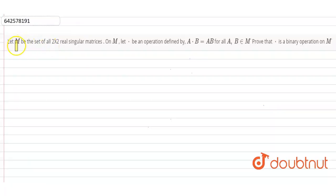So the question says, let M be the set of all 2 into 2 real singular matrices. On M, let dot be an operation defined as A dot B is equal to A into B for all the matrices A and B which are in M. So we need to prove that this dot is a binary operation on M.